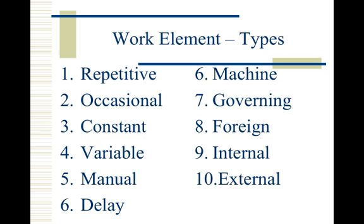A constant work element is one with little variation between cycles, whereas a variable element is one that is liable to vary from cycle to cycle. A manual work element is basically anything that is done by hand. Right elements are unneeded and should ideally be eliminated from the process.